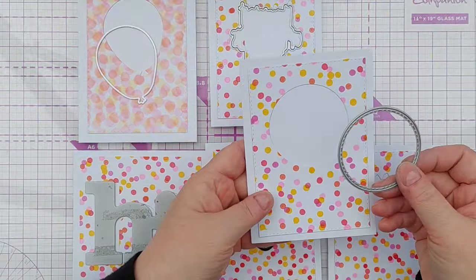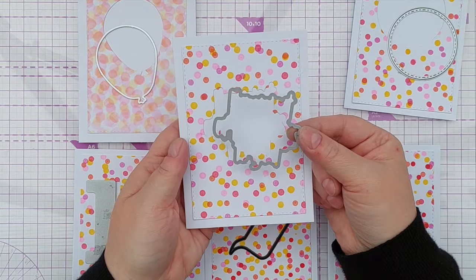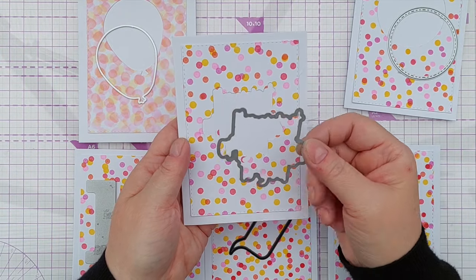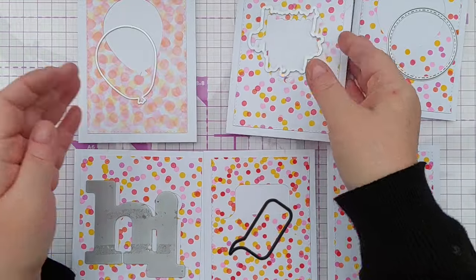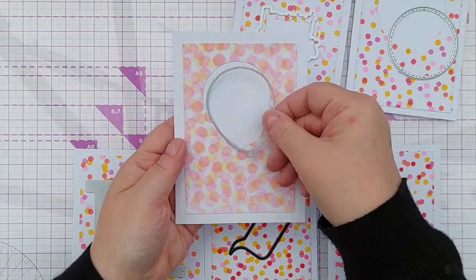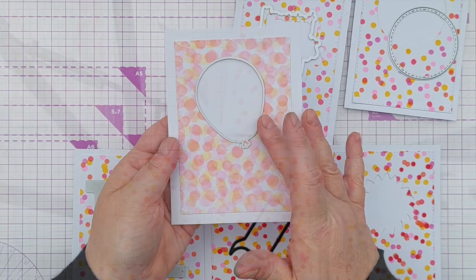This one I just did a circle. This one I used a sentiment die and I'm going to get the sentiment out and stamp in there in a tick. And this was the stenciled one and I cut a balloon out of it.